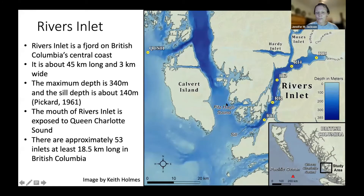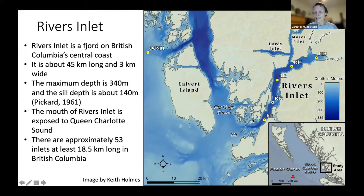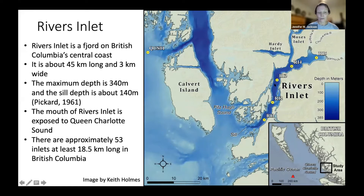Rivers Inlet is an inlet on the mainland coast of British Columbia. You can see it pictured here — it's located between the northern tip of Vancouver Island and Haida Gwaii. It's about 45 kilometers long in total and about three kilometers wide at its widest. The maximum depth is in the basin, about 340 meters deep, and the sill is at the mouth of the inlet at about 140 meters deep.